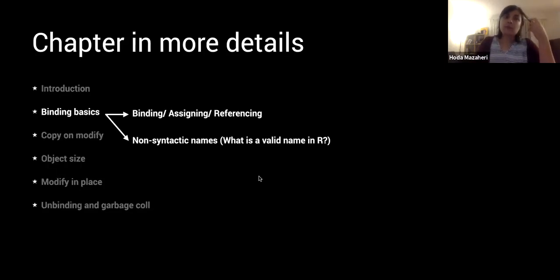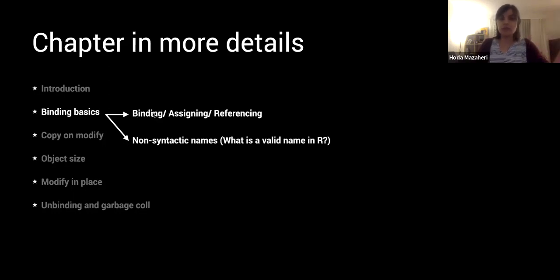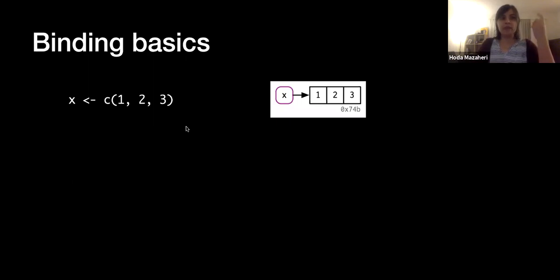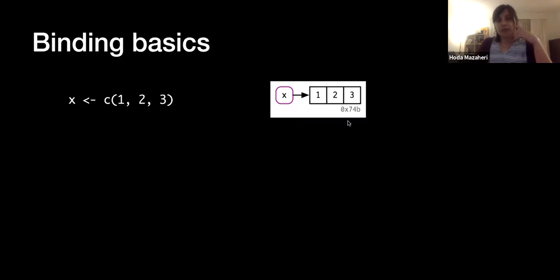In the first part we learn visually how binding works. Throughout this presentation I will refer to this concept as either binding, assigning, or referencing. More importantly, we learned what a valid R name is. This code creates an object — a vector of three values, one, two, three — and then assigns a name, in this case X, to it. I found these visualizations very interesting as they help us understand what R internally does when assigning a new object.